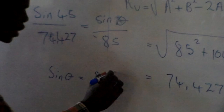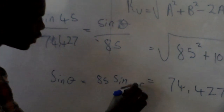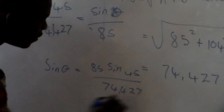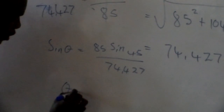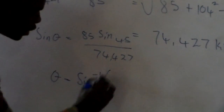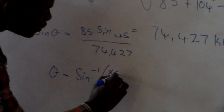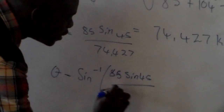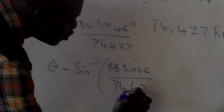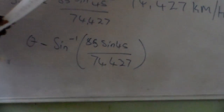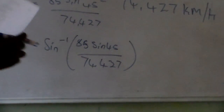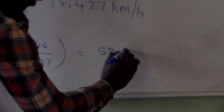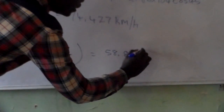Substituting the values: sine theta equals 85 times sine 45, divided by 74.427. Therefore, theta equals the inverse sine of that expression, which gives us theta equal to 58.85 degrees.